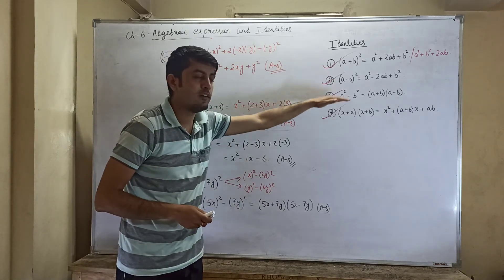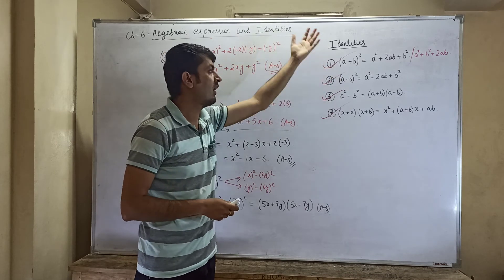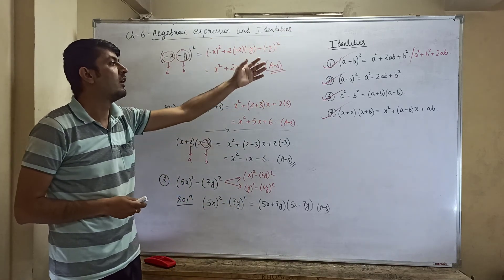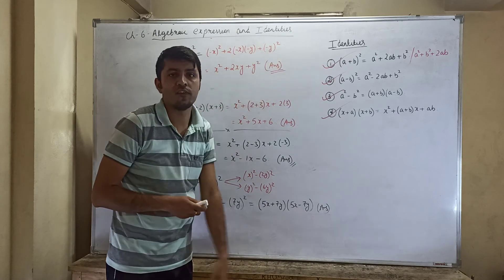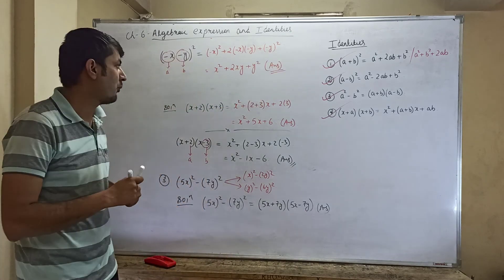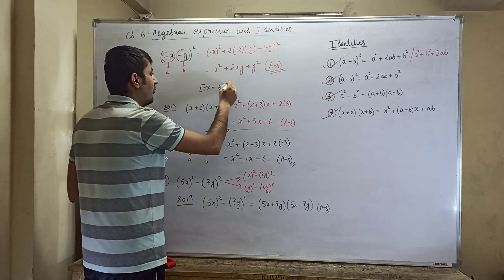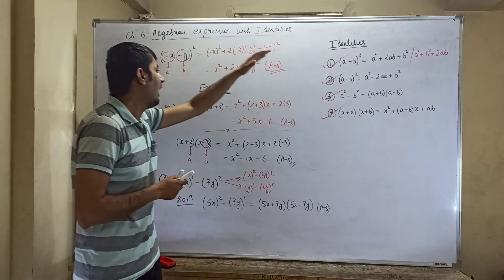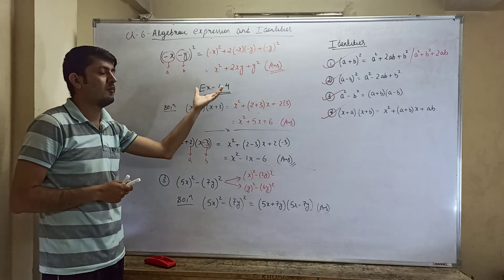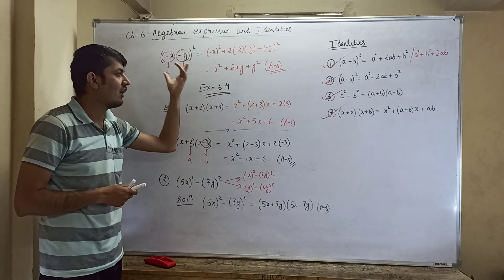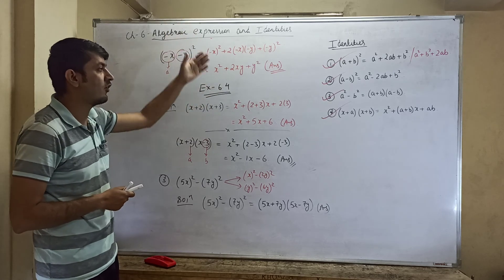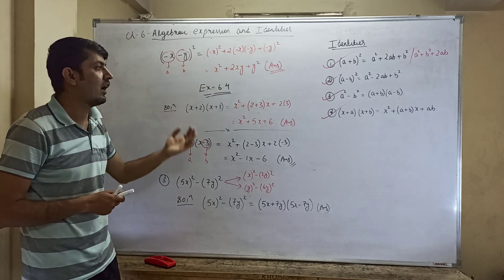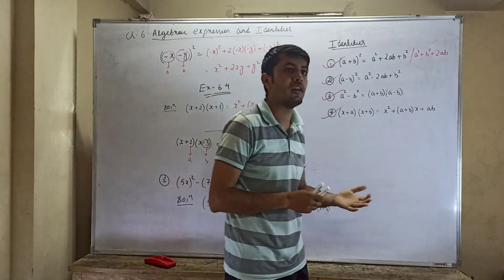So what you should do is write down these identities two or three times until you are very comfortable using them to solve problems. Once you are okay with the basic concepts, the problems in exercise 6.4 from your textbook are all based on these identities. You will be able to solve exercise 6.4 using these identities. Thank you, and we'll meet in the next video.